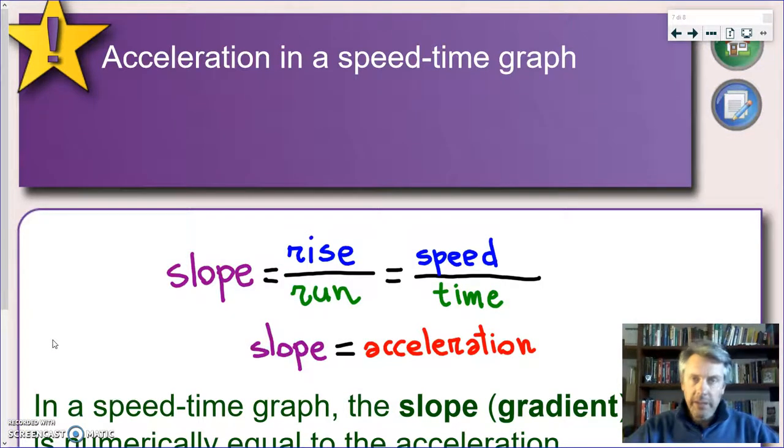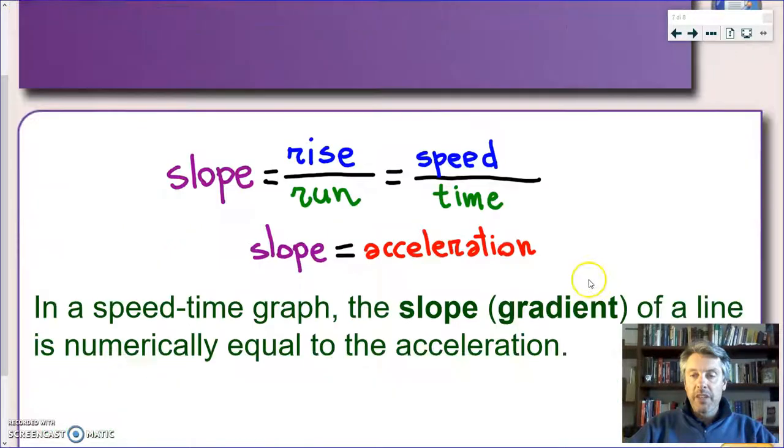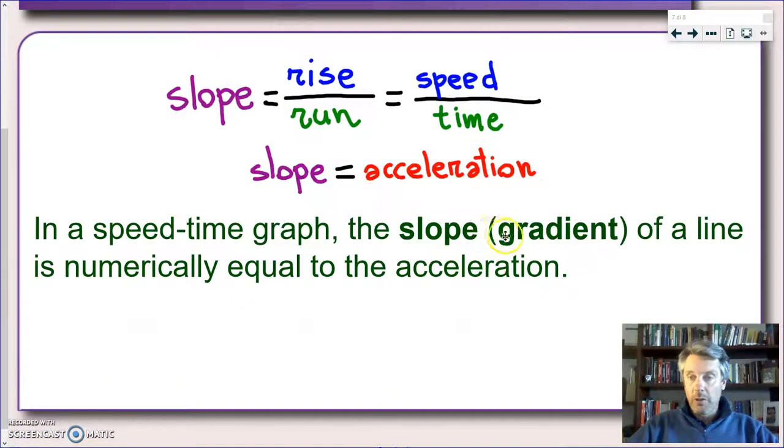At this point, I have already hinted at a result which is exactly like the one we found for distance time graphs. Let's remember again how we find the slope of a line in an x-y graph. The slope of a straight line is given by rise over run, how much you go up divided by how much you go across. That means we divide by the x variable, but in this case, the y variable is not the distance, it is the speed. The x variable is always the time. But what is the change of speed over time? That's correct. That's the definition of acceleration. In a fashion very similar to what we said previously, in a speed time graph, the slope, also known as the gradient of a line, is numerically equal to the acceleration.